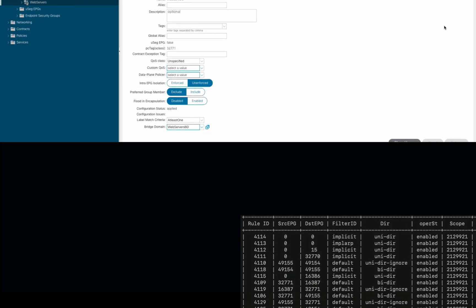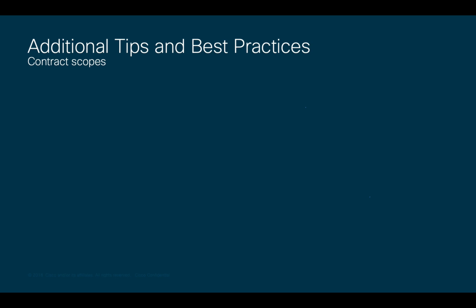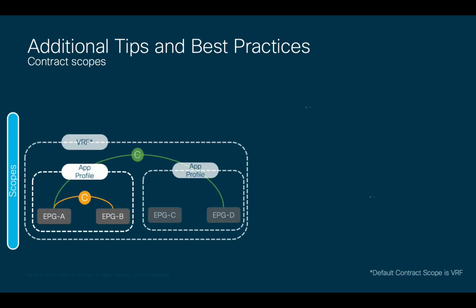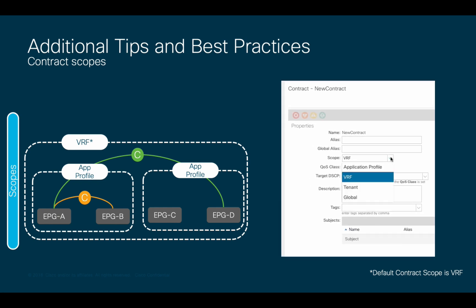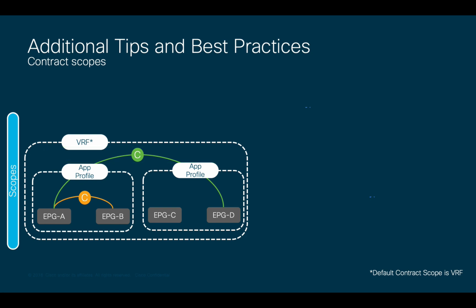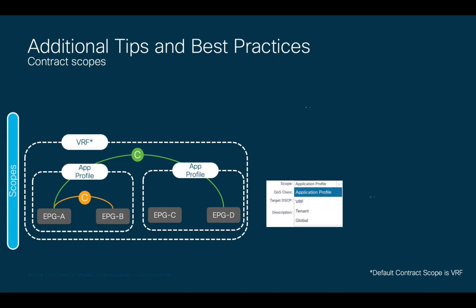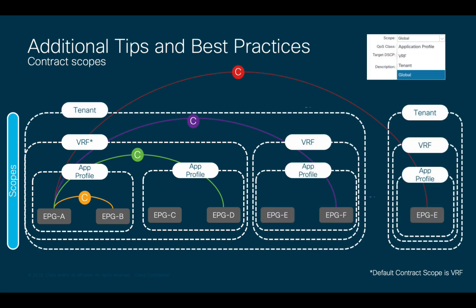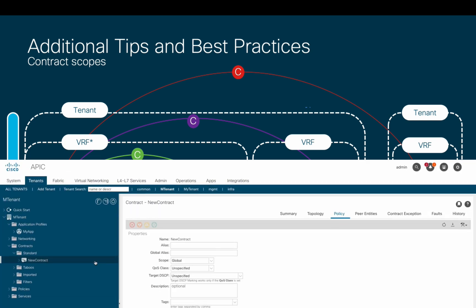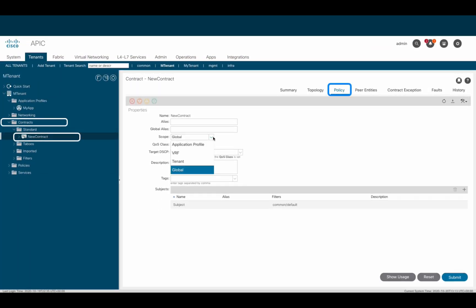In terms of configuration, we can also limit how contracts are used by defining their scope. By default, every contract we create has a VRF scope, meaning it can be used to communicate different EPGs in the same application profile or in different application profiles, as long as they belong to the same VRF. There are other scopes which may limit this further, either at the application profile level, at the VRF level, or even globally, allowing contract usability even across different tenants. You can adjust the scope of a contract at any given time.